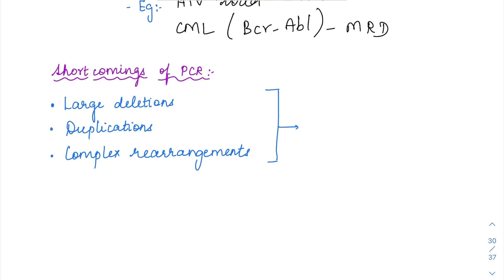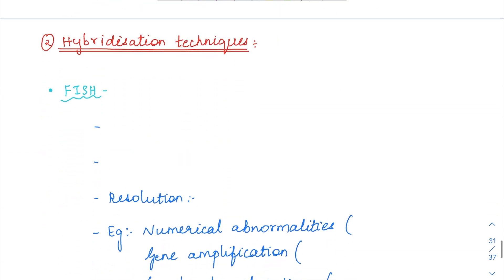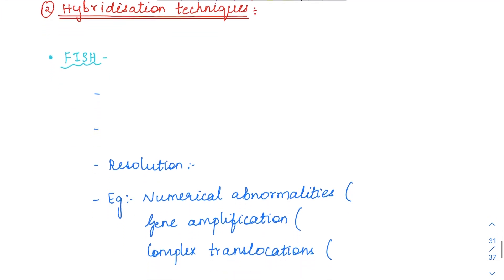So now we have seen about the various types of PCR. What are the shortcomings of PCR? PCR cannot detect any large changes like large deletions, duplications, or complex rearrangements such as translocations. Those cannot be detected by PCR. So for these things we are going to use something called hybridization techniques, which can be used for that purpose.